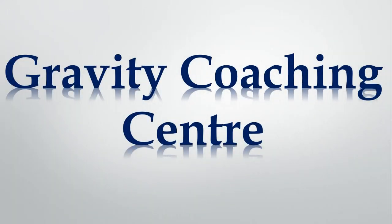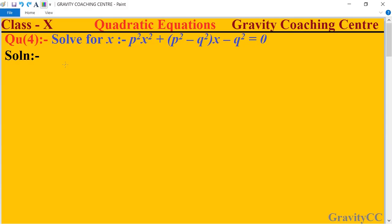Welcome to our channel Gravity Coaching Centre. Last 10 chapter, quadratic equations, question number 4. Solve for x. So here the quadratic equation is p²x² + (p² - q²)x - q² = 0.